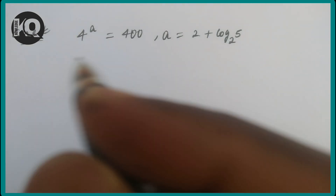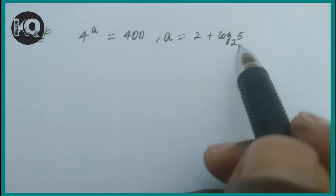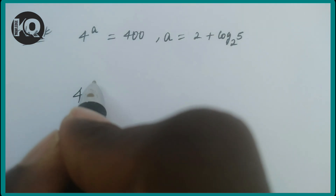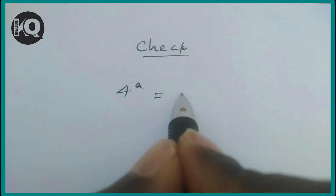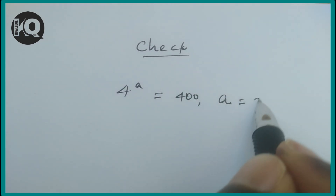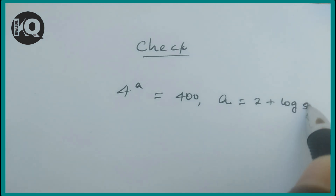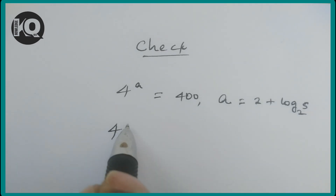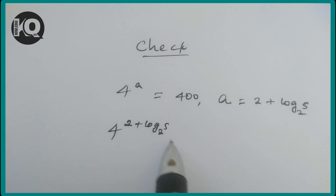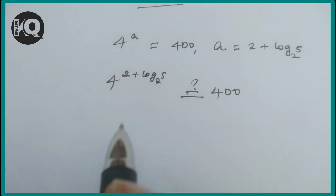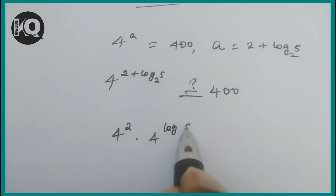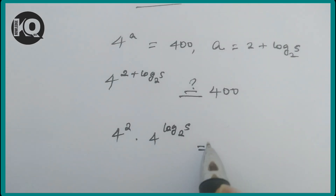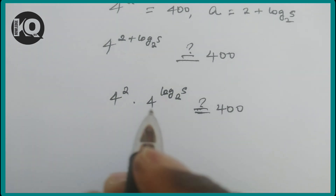Now let's verify the answer. We have 4^a = 400 and a = 2 + log₂(5). Substituting: 4^(2 + log₂(5)) = 400. This can be split as 4² × 4^(log₂(5)), which equals 16 × 4^(log₂(5)).